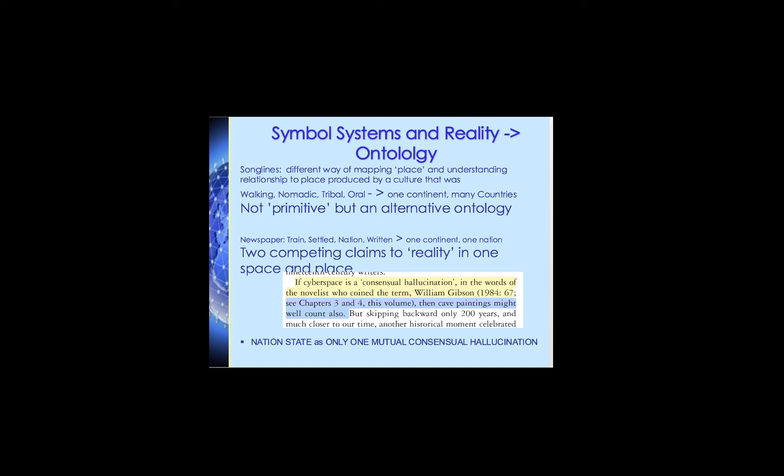Even in the case of settler Australia — where you have one way of being and then another way of being in the same place — the nation state is only one way of being, one ontology, one mutual conceptual hallucination that we all enter into. The state is not a natural thing; it is a constructed thing, a social thing. We consent to agreeing between us that it exists and is a place called Australia.